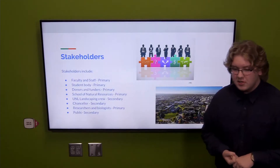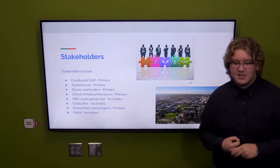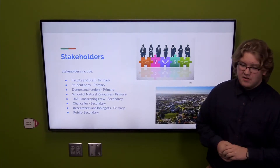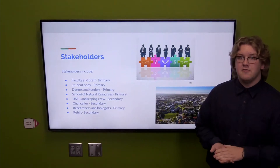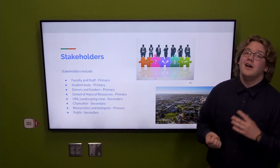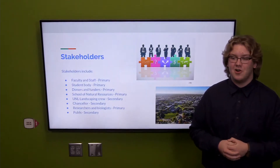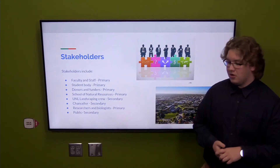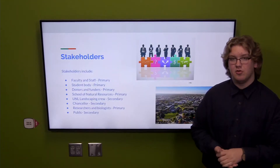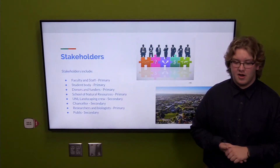Now we'll talk about our stakeholders. Main ones include the faculty, staff, and student body, as increasing biodiversity in these natural grass areas would have significant educational value and improve curriculum and opportunities for students on East Campus, especially in natural resources programs. Donors and funders will be important as money is a big factor. The School of Natural Resources will play a big role in oversight and planning. The landscaping crew will also be important as maintaining these natural areas should actually be easier for them.